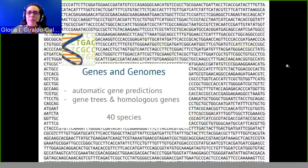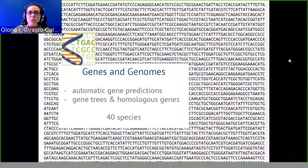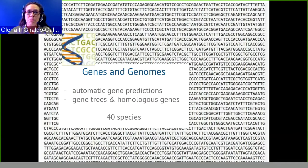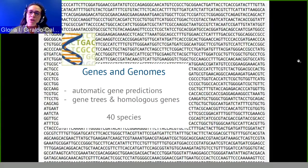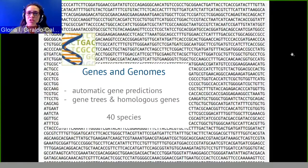We currently have about 40 species in VectorBase for genes and genomes. We use this information to predict how all these species relate to each other, and we provide homology between genes across species.